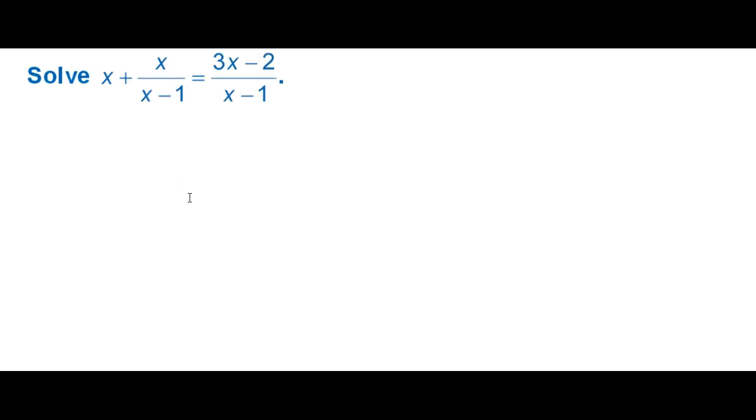So here we have our x plus x over x minus 1 equals 3x minus 2 over x minus 1 and my first instinct again always try to get rid of that denominator. So when we multiply both sides by x minus 1 we have to keep in mind that each term has to get that distributed to it. So x times x minus 1, x over x minus 1 times x minus 1 will cancel out to just x and the same thing will happen on this side as you can see when I multiply it by x minus 1 just like over here they cancel it out. So I'm going to have 3x minus 2.